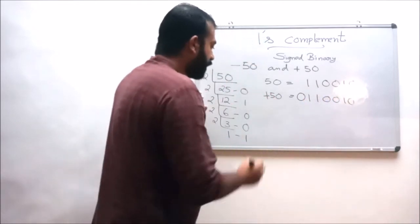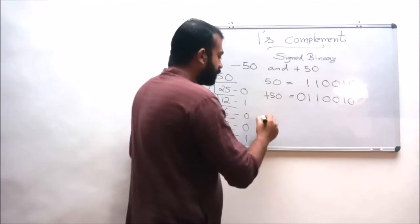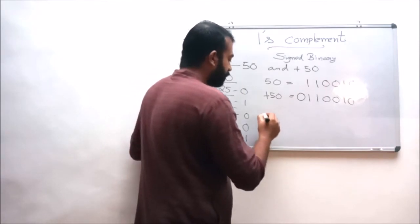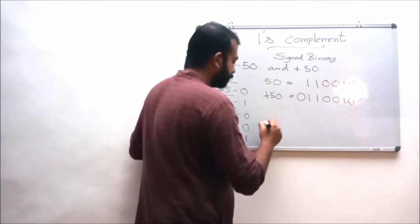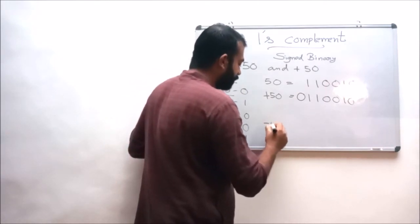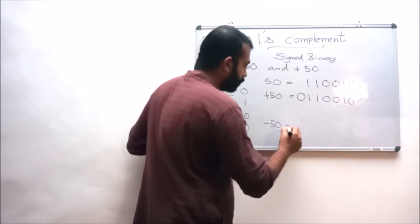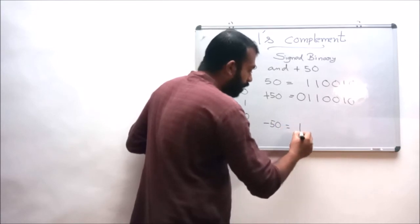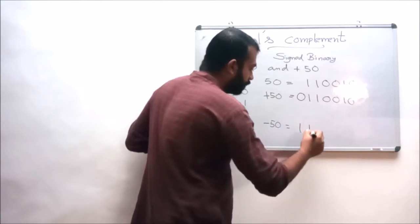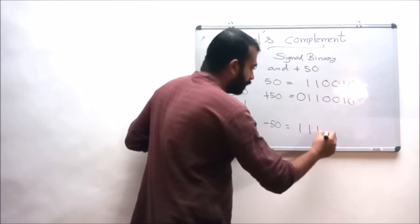Plus 50 is represented as 0 1 1 0 0 1 0, where the MSB is the sign bit 0 for positive. Minus 50 is represented as 1 1 1 0 0 1 0, where the MSB is 1 for negative.